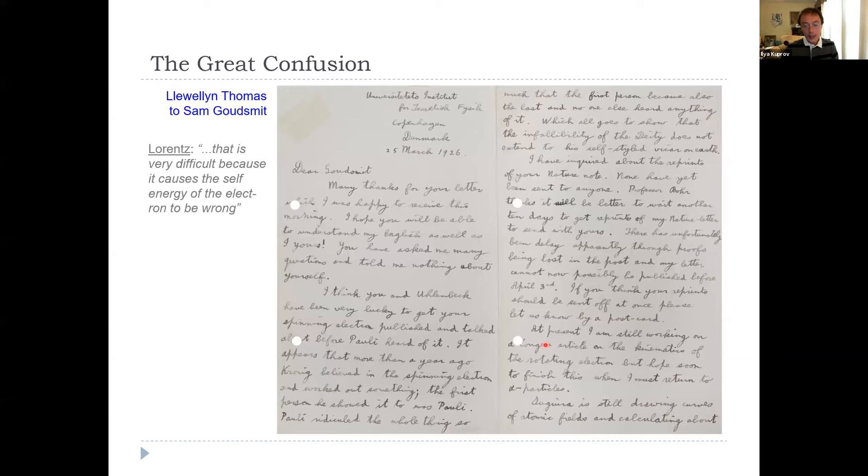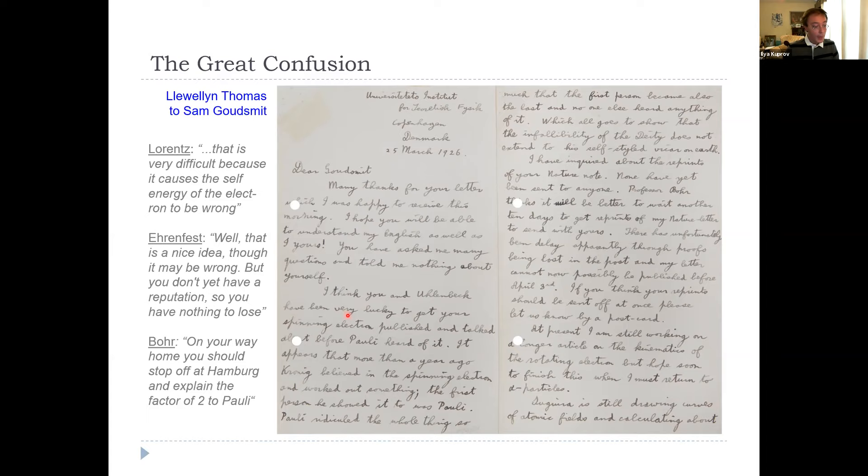There's a bit of nitty-gritty here, and he writes, 'At present I'm still working on a longer article on the kinematics of the rotating electron.' So they really believed at the time that the thing was physically spinning. Then of course plenty of contradictions arose. From Lorentz, he wrote to Goudsmit that it's very difficult because it causes the self-energy of the electron to be wrong. Ehrenfest: 'Well, that's a nice idea though it may be wrong, but you don't have a reputation yet so you have nothing to lose.' A lot of encouragement, right? Remember, Goudsmit was 24. Niels Bohr: 'On your way home you should stop off at Hamburg and explain the factor of two to Pauli.' No pressure, dude. Anyway, the factor of two was eventually found. Thomas found it, but everyone was intensely uncomfortable with the picture. On one hand it was unavoidable that you should have something like what they suggested. On the other, there was no good explanation for it.